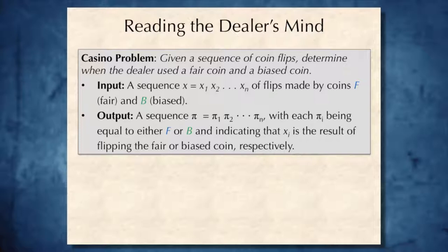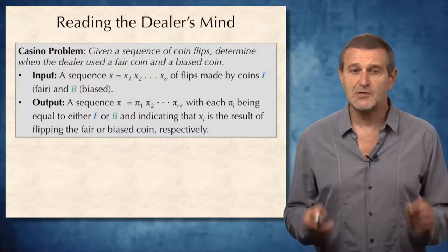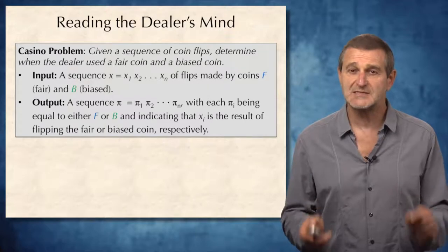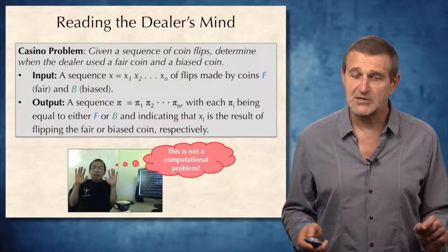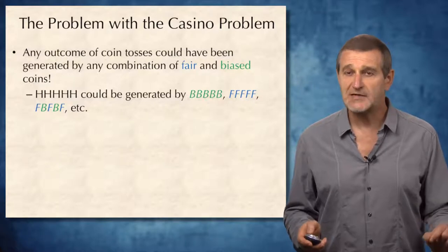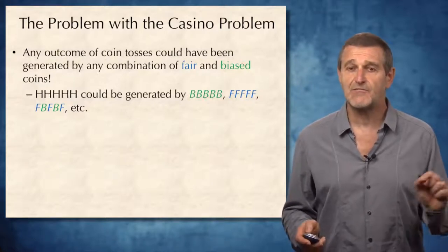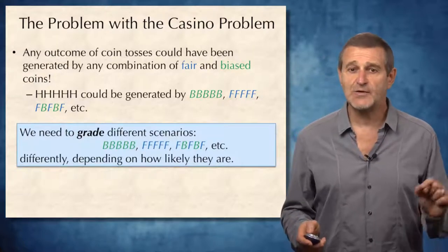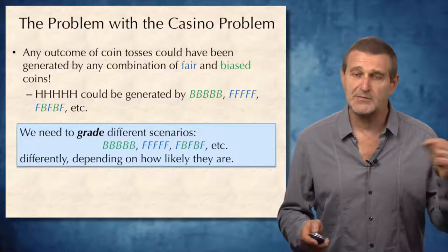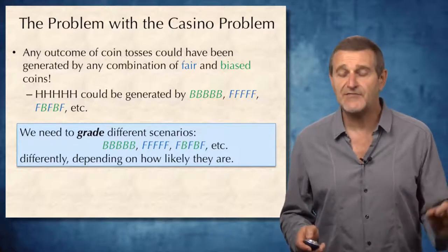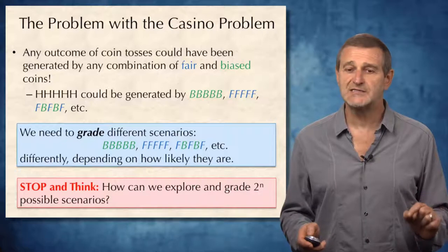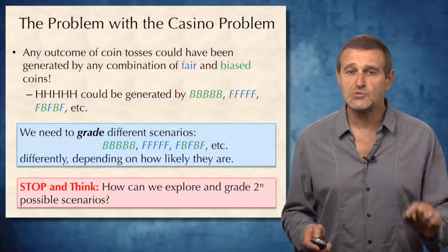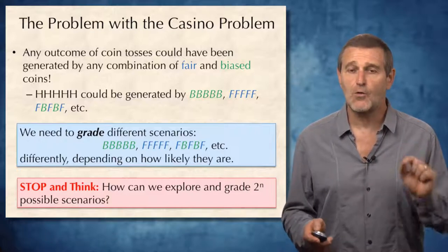After watching a sequence of flips, can you tell when the dealer used the fair coin and when the biased coin? This brings us to the casino problem: given a sequence of coin flips, determine when the dealer used the fair coin and when the biased coin. This is not a well-formulated computational problem, because any outcome could have been generated by any combination of fair and biased coins. We need to grade different scenarios — such as BBBBB, FFFFF, or BBFFBB — by how likely they are, but how can we explore all 2^n possible scenarios?